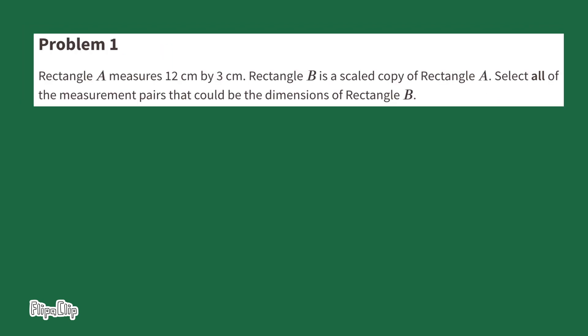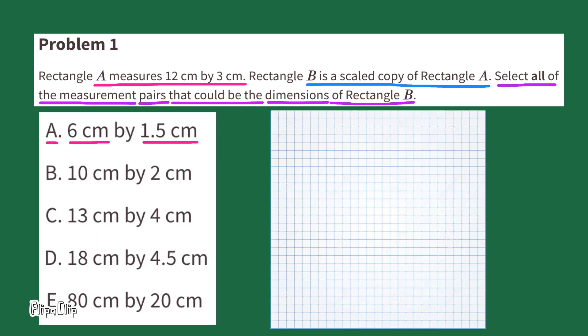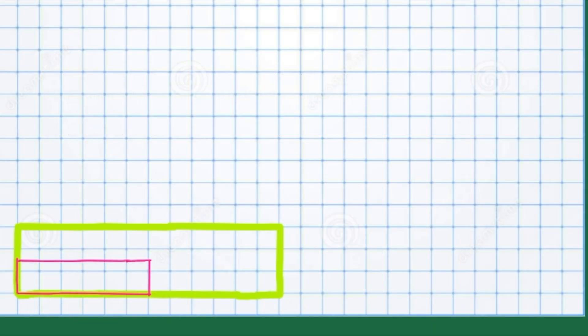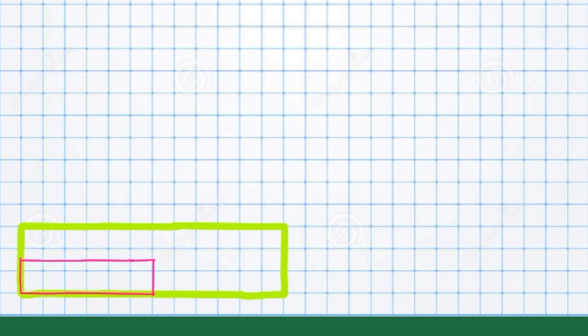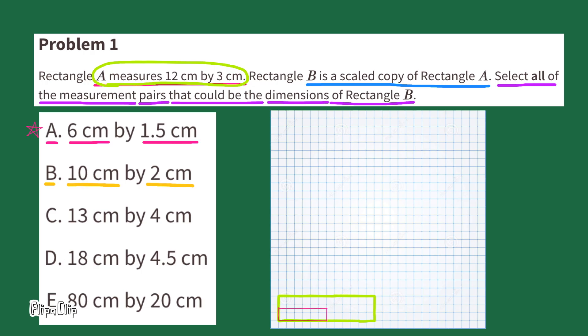Number 1. Rectangle A measures 12 cm by 3 cm. Rectangle B is a scaled copy of Rectangle A. Select all the measurement pairs that could be the dimensions of Rectangle B. First, I'll start by drawing Rectangle A, 12 cm by 3 cm. And inside it, I'll draw the first rectangle, 6 cm by 1 and 5 tenths centimeters. I notice that 6 cm is exactly half the length of 12 cm, and 1.5 cm in height is half the height. So this could be Rectangle B.